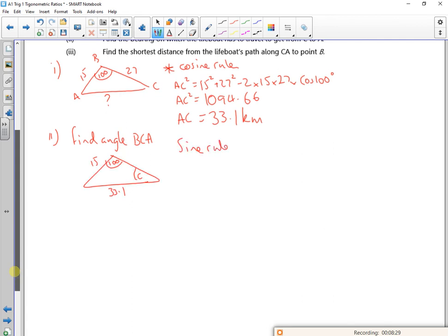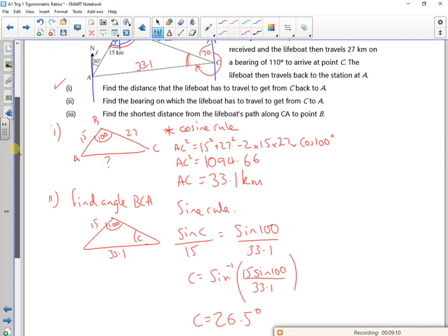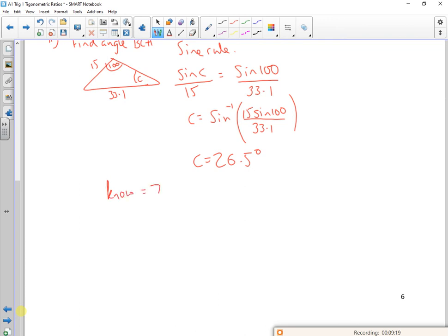So I've got sine rule. So sine C over 15 is sine 100 over 33.1. So C is the inverse sine of 15 lots of sine 100 over 33.1. Do I need to do that on my calculator? Let's do that one. So shift sine, open your brackets, 15, sine 100 over 33.1. So C is 26.5 degrees. Let's go back up to that picture. So I know that that's 26.5. Put it in there really small. So the ones I know are 70 plus 26.5, which gives me what? 96.5.